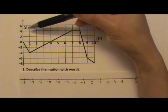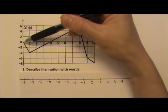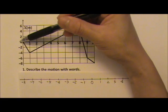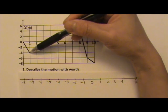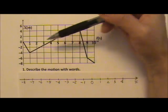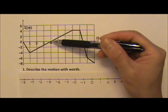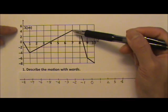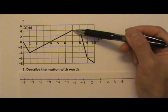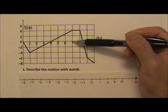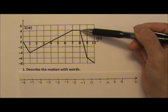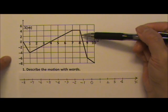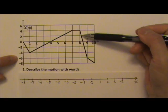This graph gives you the position directly. At t equals 0, the object is at x equals 0. Between t equals 0 and 1 second, the object moves to negative 4. Then in the next 6 seconds, the object moves past x equals 0 all the way to x equals 4. In the next second, between t equals 7 and 8, the object's position doesn't change, which means the object stays at rest. Then at t equals 8, the object starts to move all the way to x equals negative 6 within a second.